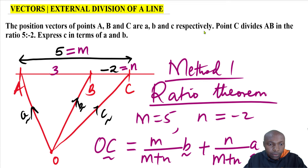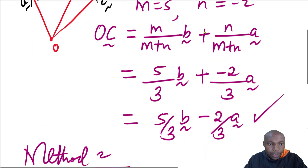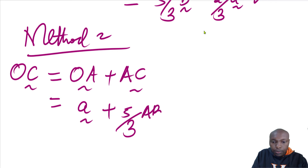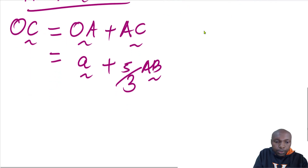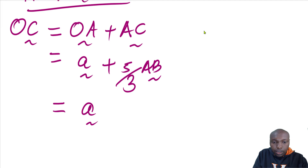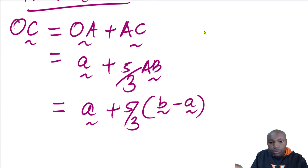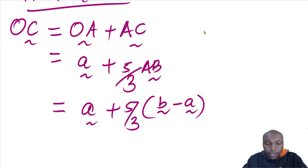So AC is given as five-thirds of vector AB. This gives a plus five-thirds AB. Vector AB is given by b minus a, since we are given the position vectors of points A and B. So vector AB equals b minus a.